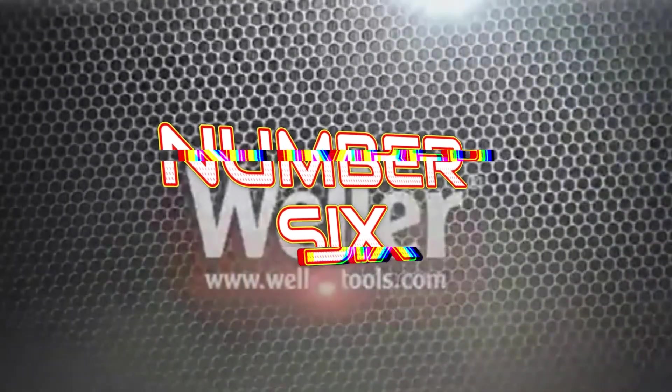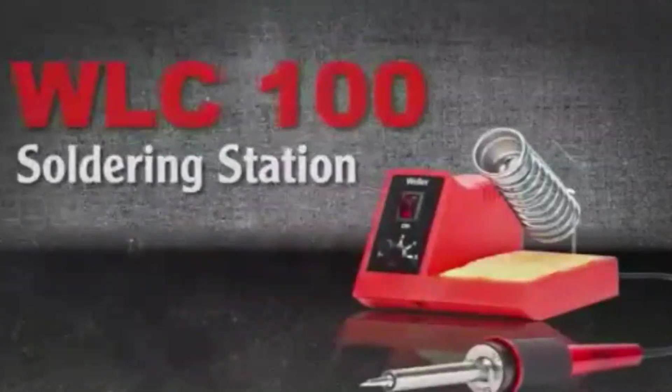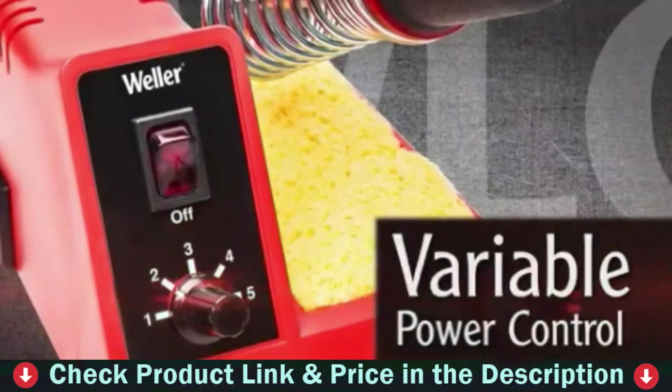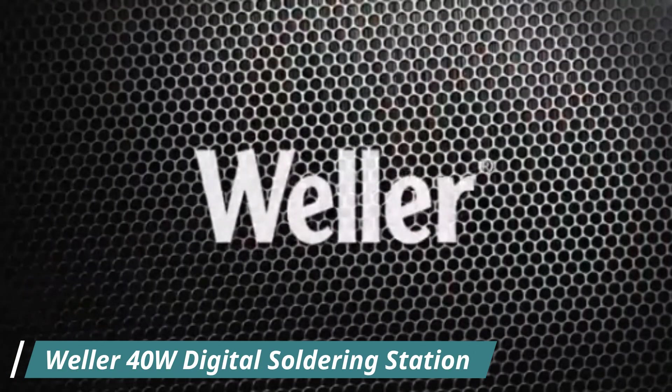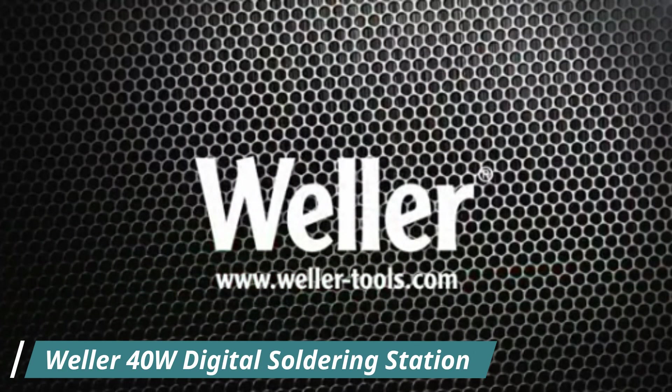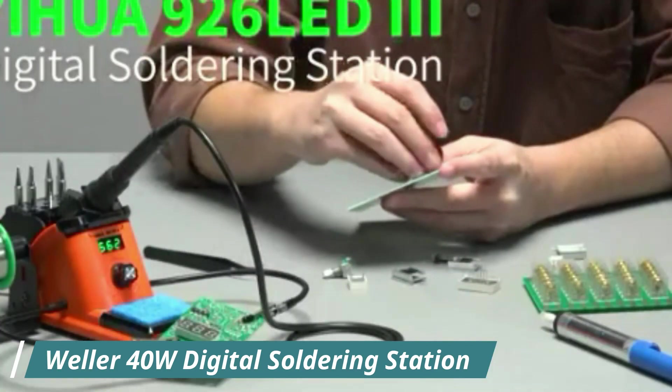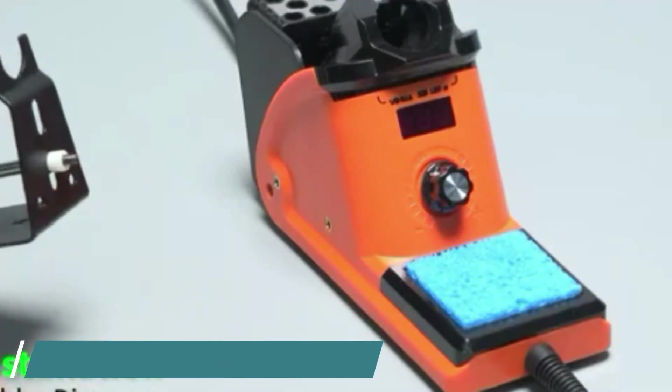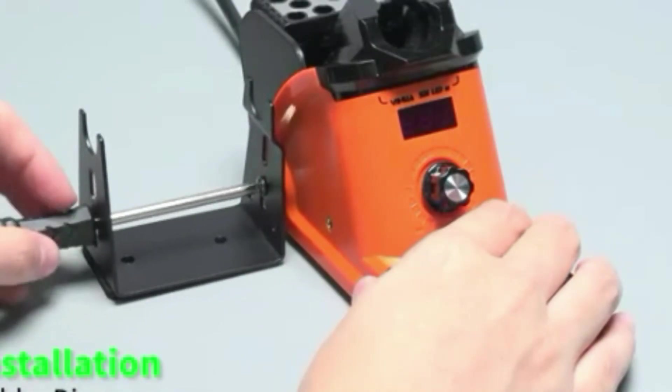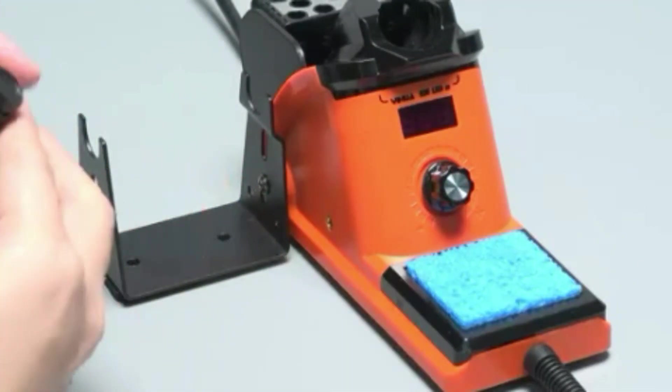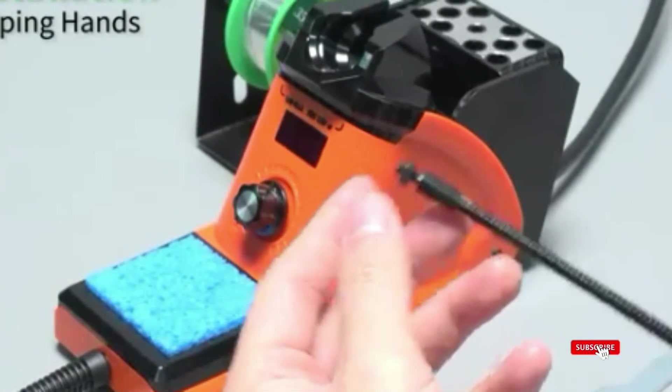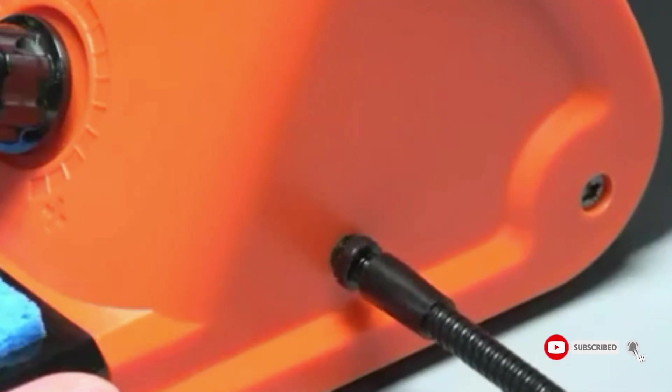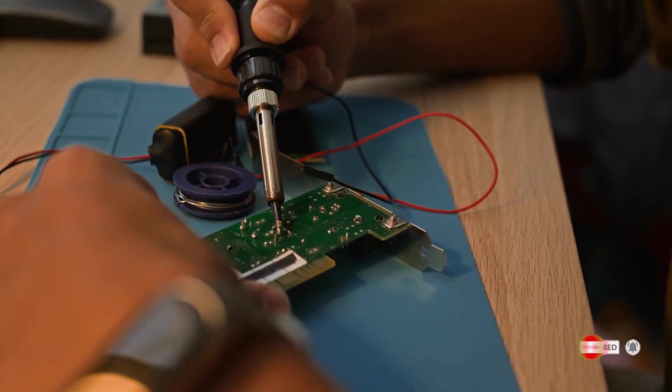Number six is Weller 40-watt digital soldering station. If you're looking for a dependable, no-fuss soldering station for DIY electronics, hobby projects, or light repair work, the Weller WLC 140-watt digital soldering station deserves a spot on your workbench. This compact yet powerful unit is known for its consistent performance and user-friendly design, making it an ideal tool for both beginners and seasoned tinkerers.